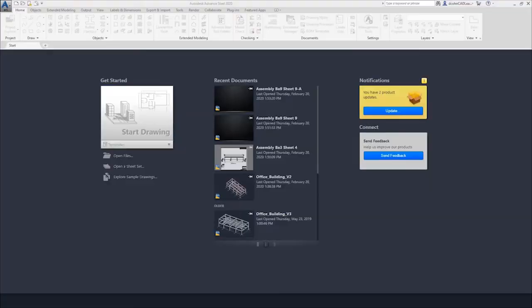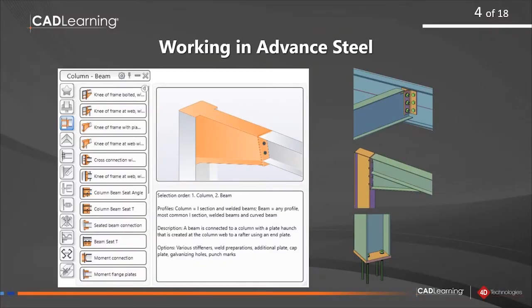Advanced Steel was developed by a company out of Hungary and Autodesk acquired the program about eight years ago. It has some very interesting tools — you'll see panels and toolbars in Advanced Steel that you won't find in any other Autodesk product. The main panel you'll work in is the connections panel, which contains all the Advanced Steel parametric connections. When you select a category on the left, you get the connections within that category along with a picture showing the order in which things need to be selected.